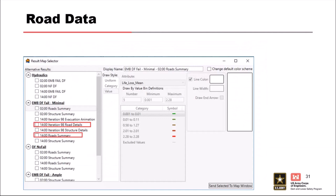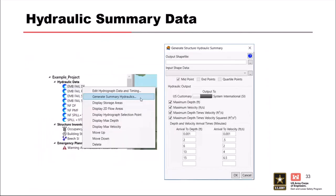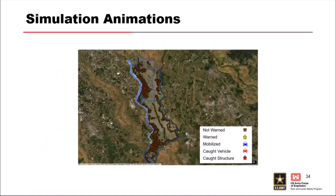There are lots of different tables to play around with — reporting out by roadways, any map window showing structure summary results and road summaries. If you see 6,000 life loss on a single roadway, chances are something was set up incorrectly. For structural results, you can look at high-level scenarios and generate summary results.